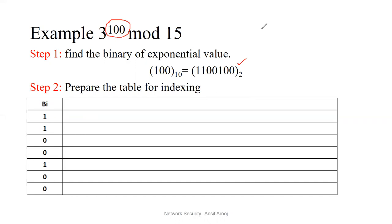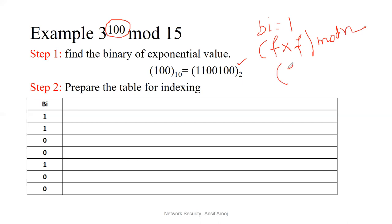If the value of b of i becomes 1, you have to do two steps: f into f mod n, and then f multiplied by a mod n. When we have 1, we have to do two steps. But first of all, at the very first step you have to do no special calculation — whether you write 0 or 1, you simply write the base as it is. So since 3 is the base here, you put 3 here.